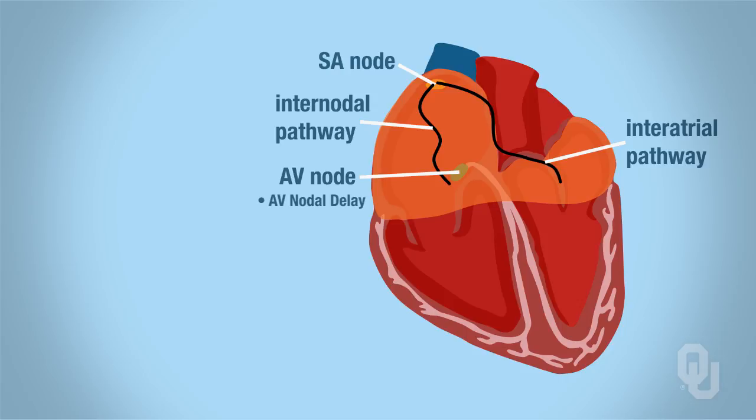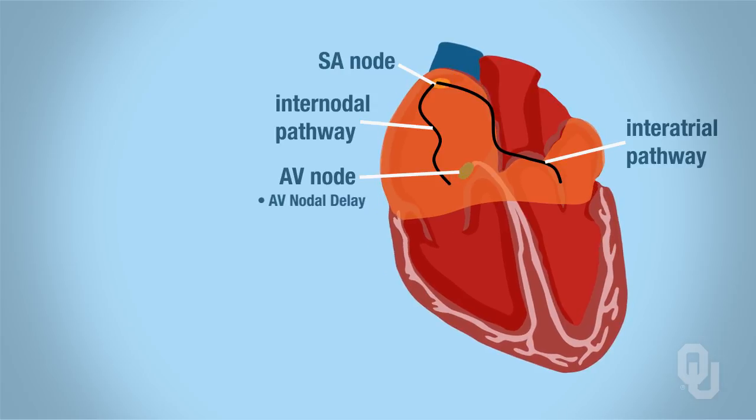The reason we have the AV nodal delay is once the ventricles are 80% filled, then the atria will contract. When the atria contract, the remaining 20% of blood will enter the ventricles. It's like we're squeezing the atria to force that remaining 20% down into the ventricles.